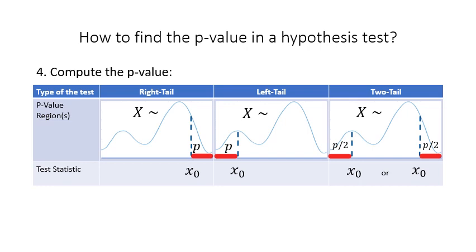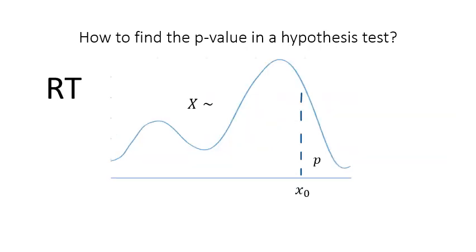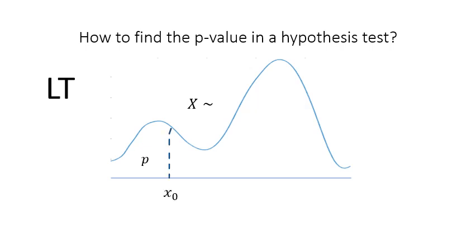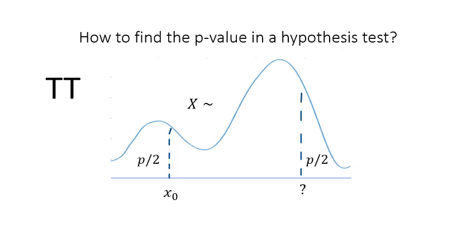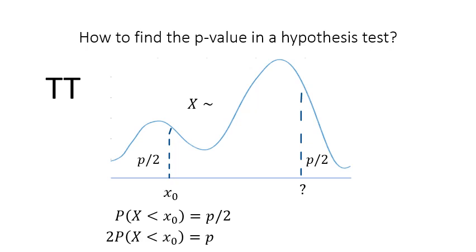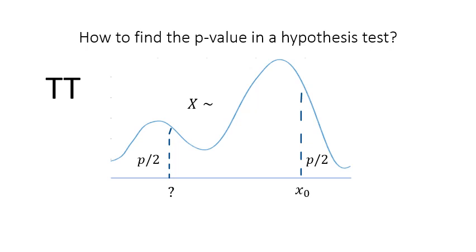Finally, we use the created diagram to compute the p-value. In the right-tailed procedure, we find the p-value as the area to the right of the test statistic. In the left-tailed procedure, we find it as the area to the left. In a two-tailed procedure, when the test statistic is on the left side, we find the area to the left, which gives only half the p-value, then multiply by two. When the test statistic is on the right side, we find the area to the right — again half the p-value — then multiply by two.